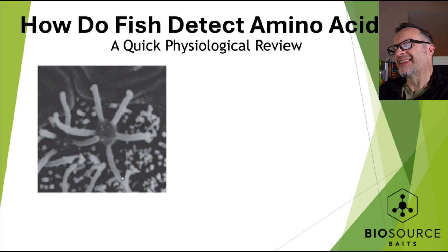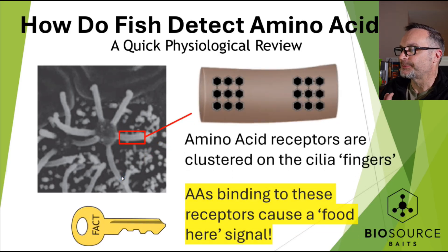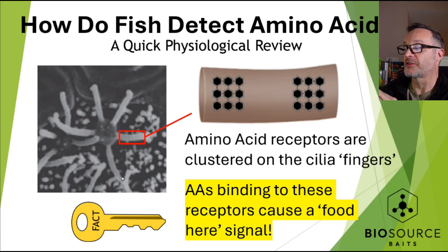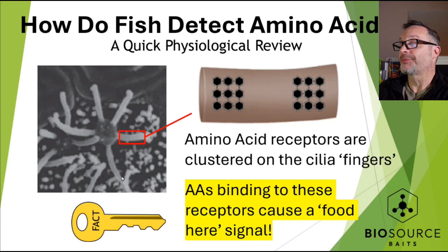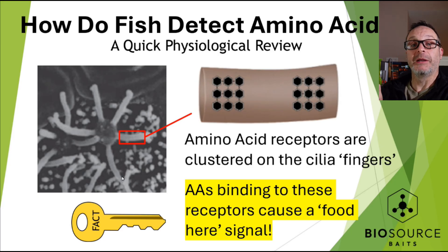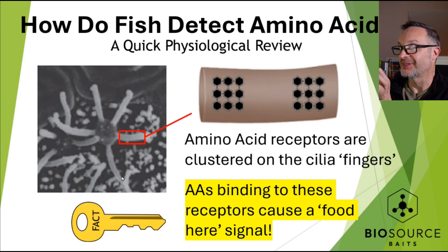Zooming in on the cilia: the amino acid receptors, shown as black hexagons, are found in clusters on these cilia fingers. When amino acids bind to these receptors it creates a 'food here' signal. So it's all about binding amino acids from the pond water to these cilia receptors.